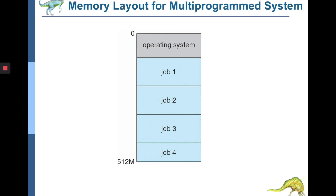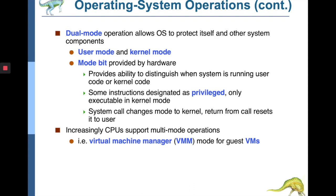There are two types of processes: operating system processes and user-defined processes. To protect the operating system from user processes, different modes are used. The basic concept is dual-mode operation, which allows the operating system to protect itself and other system components from user-defined programs. A user might try to corrupt the kernel, so there are two modes: user mode and kernel mode. Kernel mode is for running kernel operations, and user mode is active when the OS is running user applications.